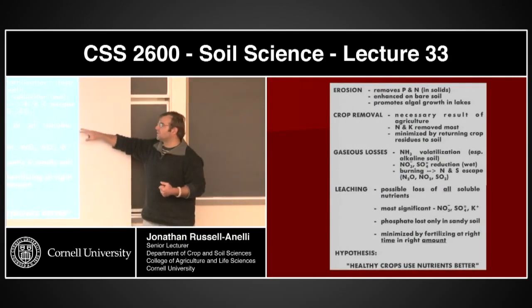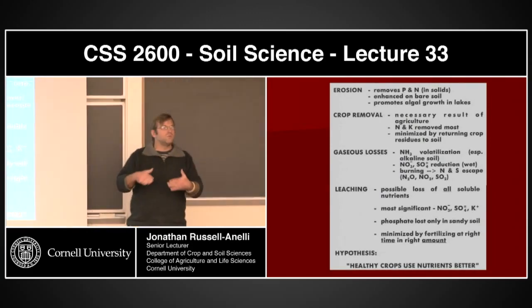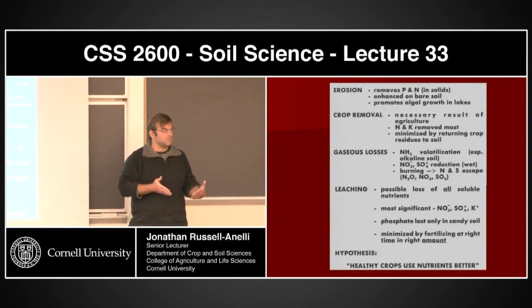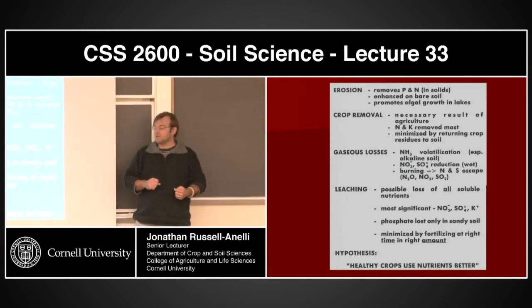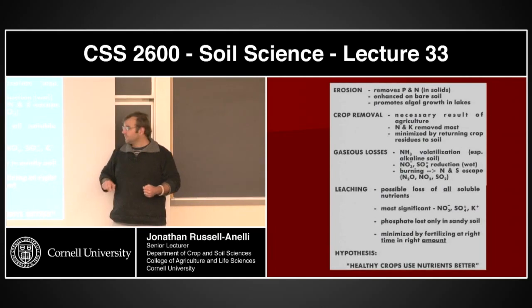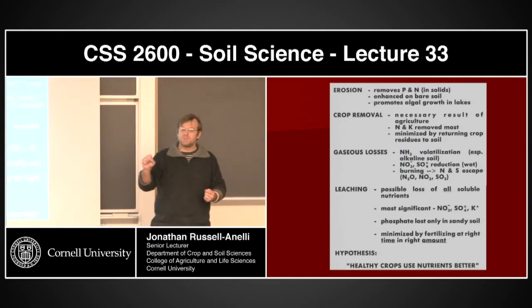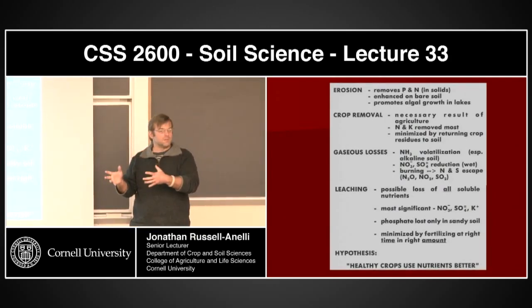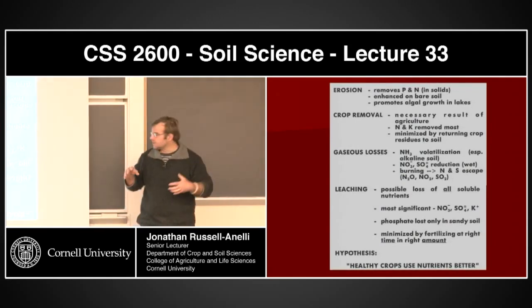Leaching is the next one. Basically, this is a possible loss for all soluble nutrients — if it is soluble, it will move with the water. If the water is moving out of the soil system where the crop is growing, it's going to be taking those nutrients with it. It's most significant when we're talking about things like nitrogen, sulfate, and potassium. Phosphorus can also be lost, but you have to think about how phosphorus binds very tightly — depending upon the pH — with aluminum and iron at low pHs, calcium at high pHs, and actually organic matter in the mid-ranges.